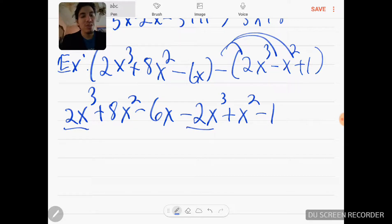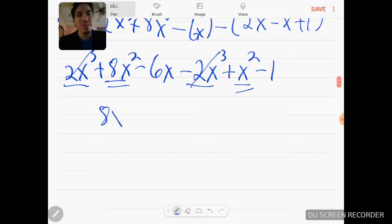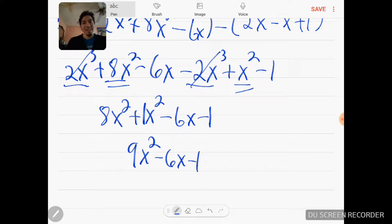So remember: negative times positive is negative, negative times negative is positive, and negative times positive is negative. So now we're going to underline the terms we're going to combine. The first one: we can see 2x³ minus 2x³, they drop out—they're the same thing, only difference is they have different signs and therefore they cancel out. So the next term I look at is my x² exponents. I'm going to write them as 8x² plus x² minus 6x minus 1. There's nothing else to combine; the only thing I have left to combine is these two. So I have 9x² minus 6x minus 1 as my final answer for that one. Let's do probably two more.